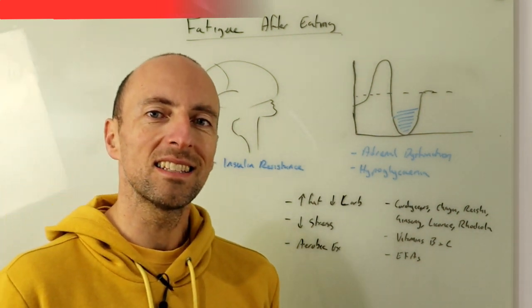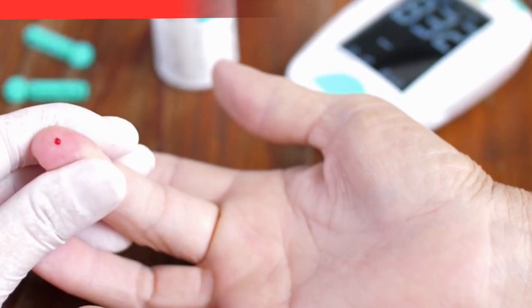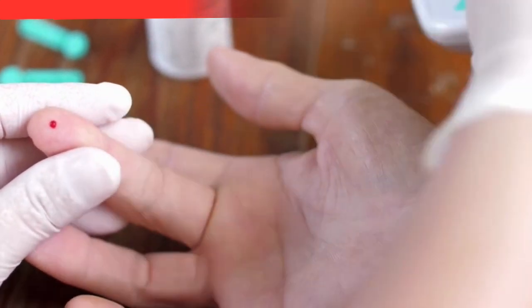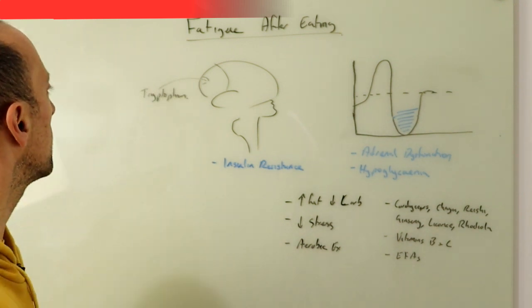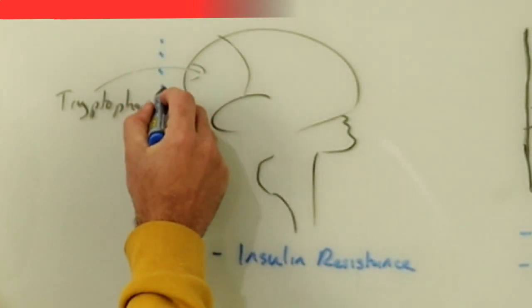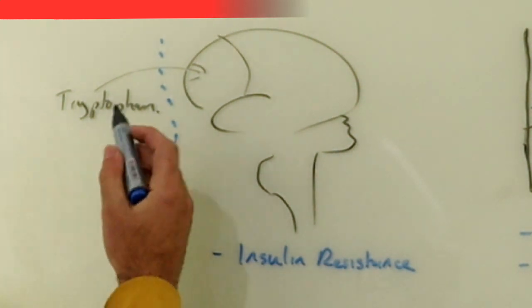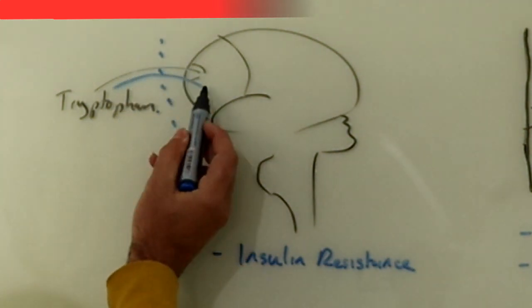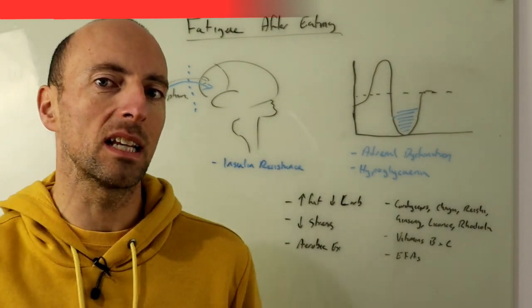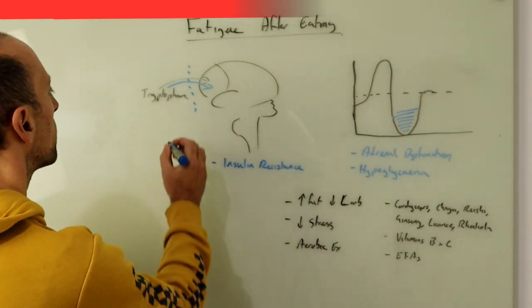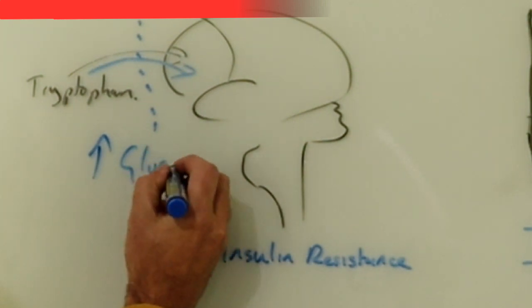So if we're starting to get insulin resistant we don't utilize glucose very effectively anymore and what happens then is that there's a barrier that exists here and when we have our insulin resistance occurring we can't get tryptophan over that barrier and into the brain effectively anymore unless we provide it with high amounts of glucose.